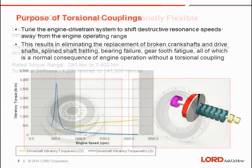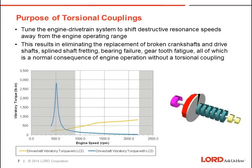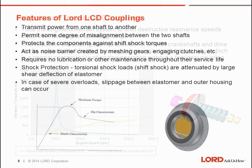The purpose of using a torsional coupling is to tune the engine drivetrain system to shift destructive resonance speeds away from the engine operating range. This results in eliminating the replacement of broken crankshafts and drive shafts, spline shaft fretting, bearing failure, and gear tooth failure — all of which are normal consequences of engine operation without a torsional coupling.